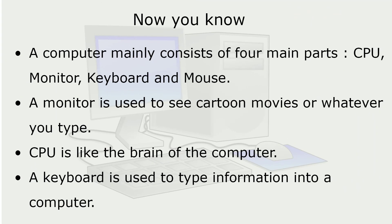Now you know. A computer mainly consists of four main parts: CPU, monitor, keyboard, and mouse.